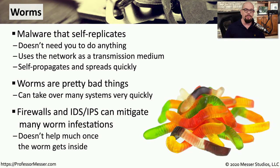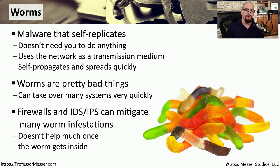Once the worm has been identified and a signature has been created, we can usually stop the propagation of the worm at the firewall or the IPS. This requires that we know the worm exists and can create a signature for it, and that we can place a firewall or IPS between systems to block that flow of communication.